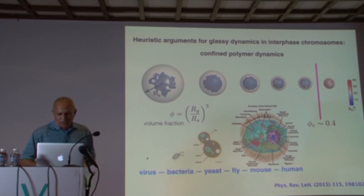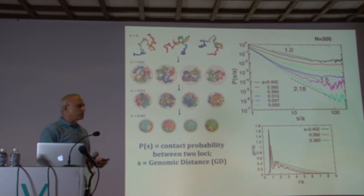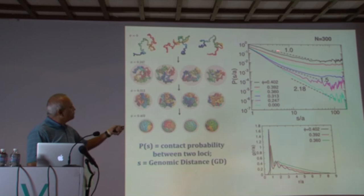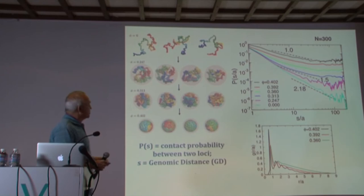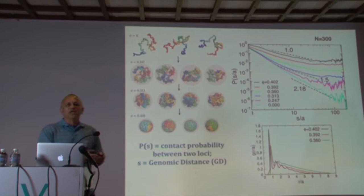We chose N equal to 300 — hardly a full genome — but we know how to do finite-size analysis to extrapolate to larger N. This is the contact probability as a function of genomic distance. As you increase the volume fraction from zero up to about 0.4, you can see scale-dependent variation in the exponent. At some point you get fractal-like behavior that Shakhnovich, Rosenberg, and colleagues discussed long ago in a different context. And not surprisingly, there is also accompanying ordering when you squeeze the polymer, as these structures must be packed properly — you can see the emergence of that at volume fraction 0.40.